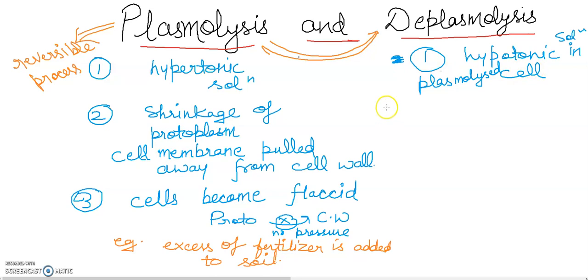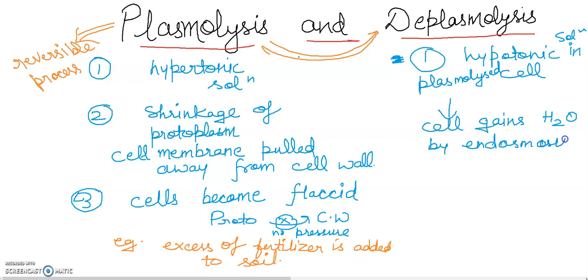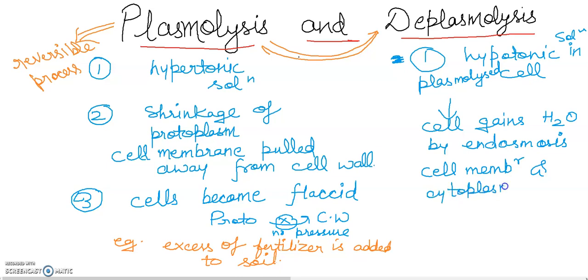When we add pure water or hypotonic solution to a plasmolyzed cell, the cell will gain water by the process of endosmosis. If you haven't seen our endosmosis and exosmosis video, please go to our playlist. By endosmosis, the cell membrane and cytoplasm will come back to their normal position.